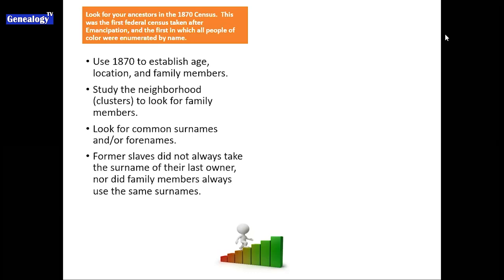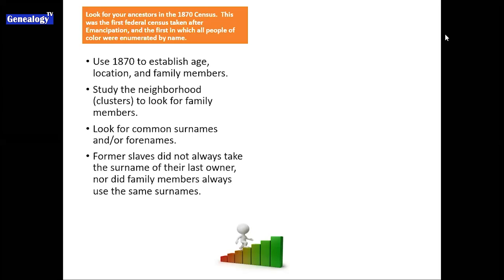You also want to study the neighborhood — what we call cluster research — to look for any known or potential family members. You want to look for common surnames, but be careful because not all formerly enslaved family members took the same surname. You could have brothers living next door to each other who have different surnames. Give it a good microscopic look a few pages forward and a few pages back from where you found your ancestor, and if you see common surnames, white or black, make note of those.